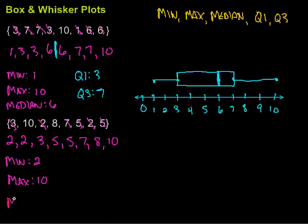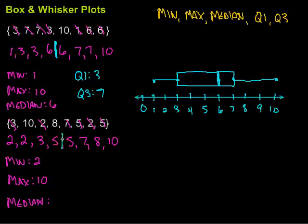The median is the middle value of our set when it's in order. There are eight values in this data set, so the middle falls right between the two fives. My two middle values are the same, so the median is just going to be five.